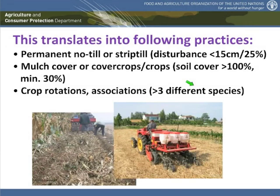These three principles can also be quantified. When we talk about minimum soil disturbance, how much is minimum? We have found that if we disturb less than 25% of the soil surface, but never more than 15 cm in a single strip, we still achieve the basic objectives of conservation agriculture. You will hear in the second talk more about related issues like carbon sequestration.